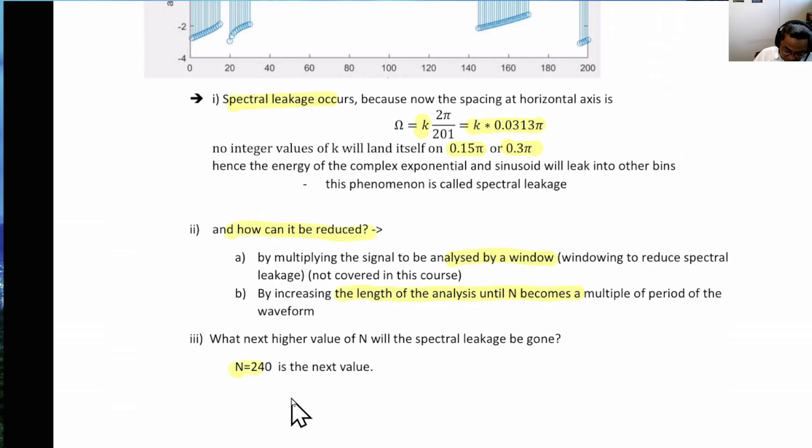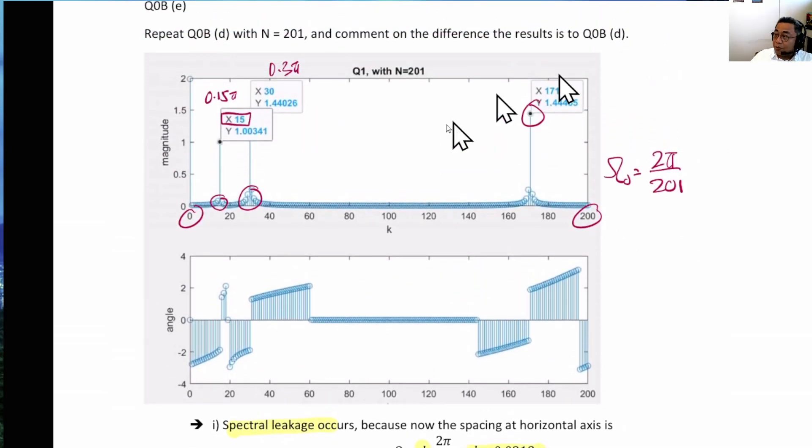Okay, and when is the next best period? If we are not interested in 201, we can increase up to 240. And when we increase to 240, again, this 0.15 pi and 0.3 pi will land exactly at the correct or at an integer of k value. And then no spectral leakage will occur.